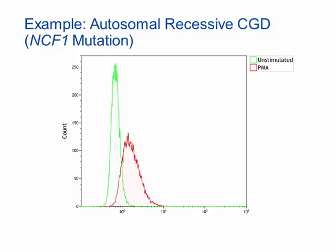In the autosomal recessive forms of CGD, the DHR test usually shows a different pattern where there is diminished neutrophil oxidative burst and decreased DHR fluorescence on the x-axis with the red histogram. The green histogram is the unstimulated sample used as the control for comparison. This patient had a mutation in the NCF1 gene encoding the P47-phox protein.